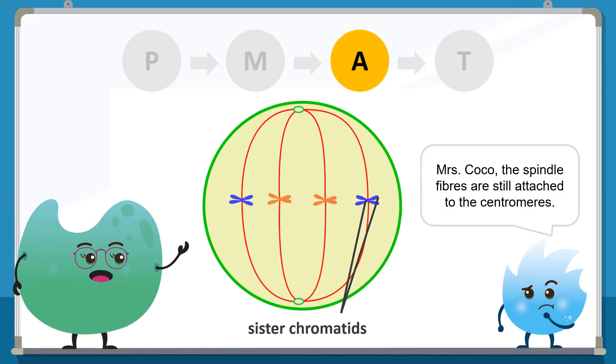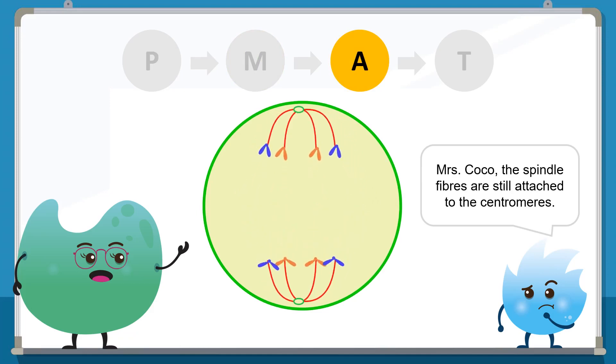The spindle fibers now shorten and the sister chromatids separate. Additionally, the poles of the cell move further apart, causing the sister chromatids to pull apart.